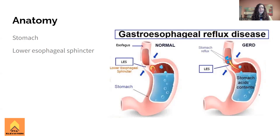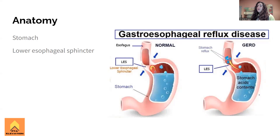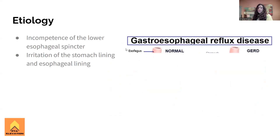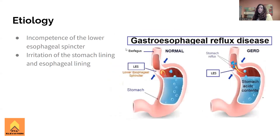Essentially what we're looking at is the stomach and the lower esophageal sphincter, which is what attaches the esophagus to the stomach itself. What happens when we have GERD is that we'll have reflux — the stomach acid contents start going up from the stomach and into the lower parts of the esophagus, causing irritation, reflux, sour taste in the mouth, heartburn, and all those things.